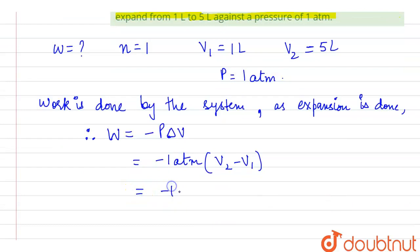So this will be minus 1 atmosphere into 5 minus 1. So this is minus 1 into 4, which equals minus 4 liter atmosphere.